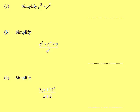Question 3. Simplify P cubed times P squared. When we multiply powers we add them, so that's the same as P to the power of 5.